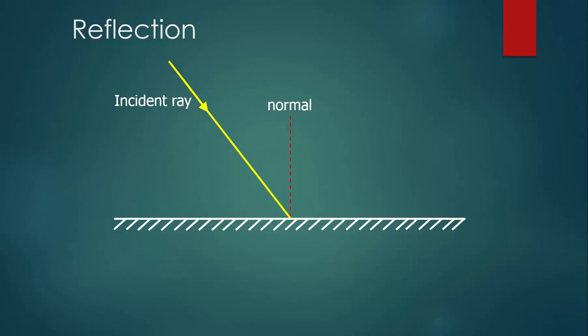The angle we care about is the angle between the incident ray and the normal. And we're going to call this theta i. This stands for angle of incidence.